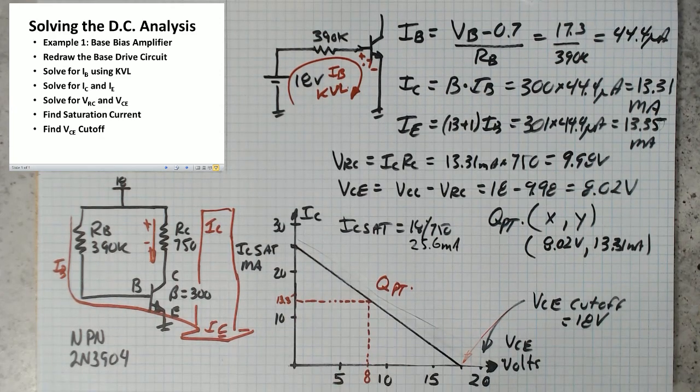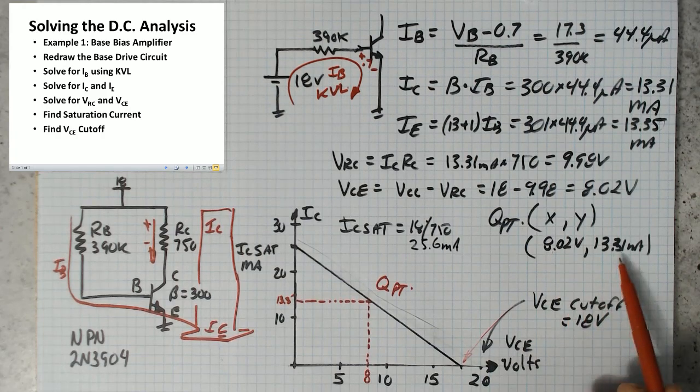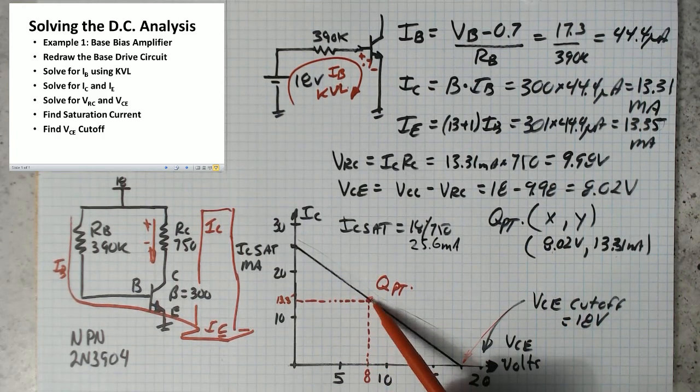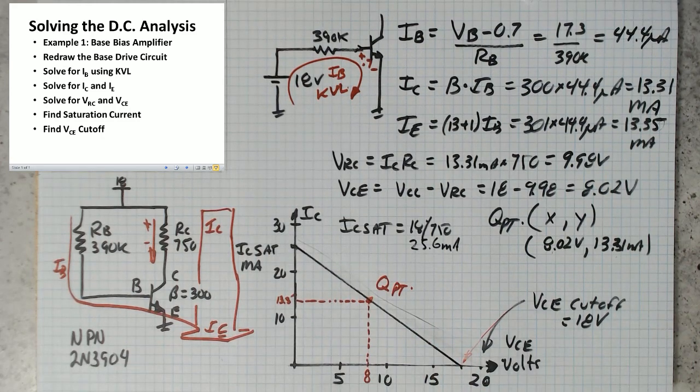So now we've got a graph. We can plot our Q point. Our Q point was at 8.02 and 13.31. Plot that point on the line, and we can see that it's pretty much right on the line.